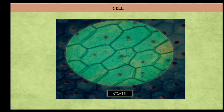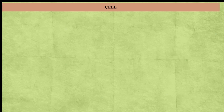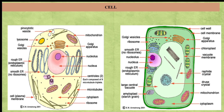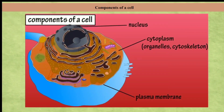We need a microscope for the observation of cells because we cannot see them with our naked eyes. Cells are present both in plants as well as in animals — this one is the animal cell and this is the plant cell. The cell is made up of many components like plasma membrane, cell wall, and cytoplasm. Let's see them one by one.